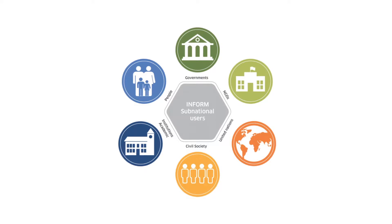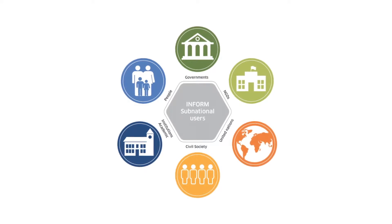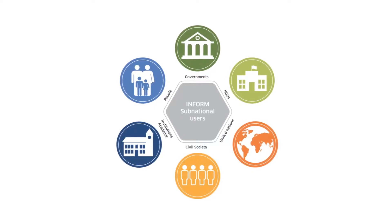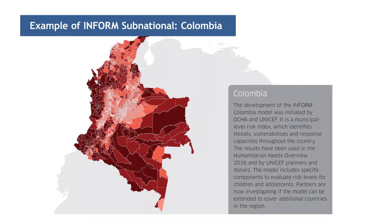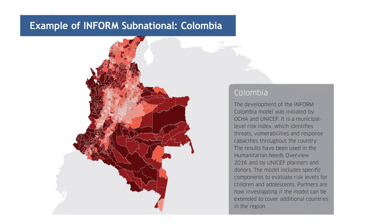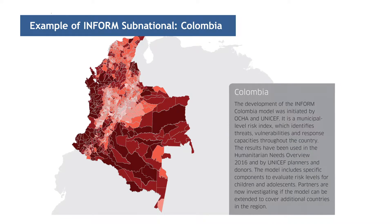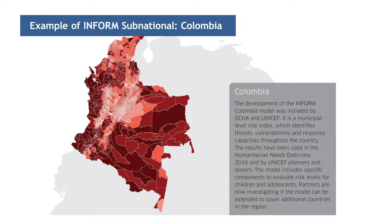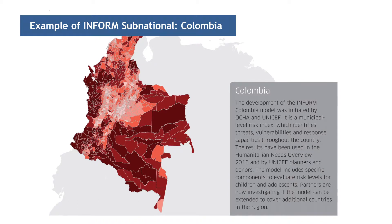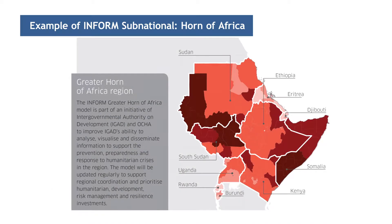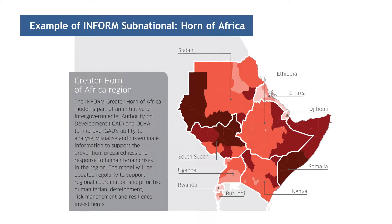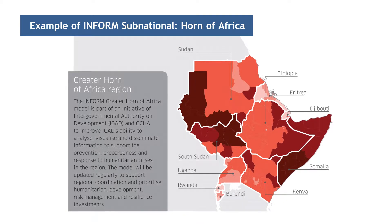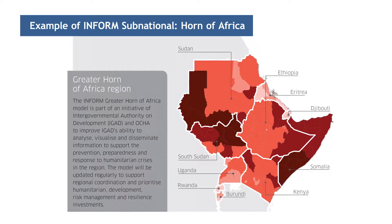Developing an INFORM subnational model is a locally owned and managed process. It is cost efficient and it's supported by the global INFORM partnership. This approach ensures that each model has local buy-in and is used in local analysis and decision-making processes. It makes sure that the entire process is adapted to the local risks that are faced in that place. In addition, the model draws on global resources and expertise, and is validated according to global standards and best practices.